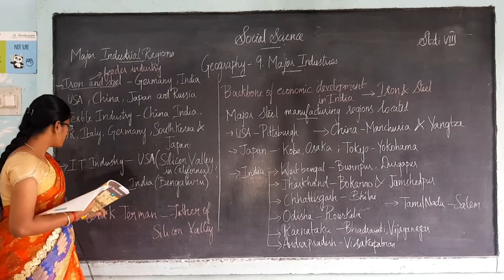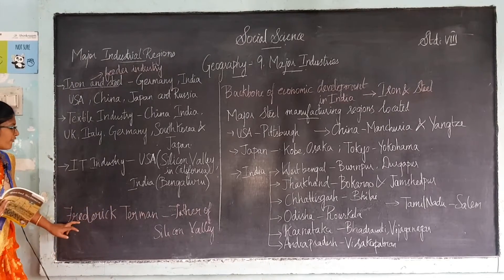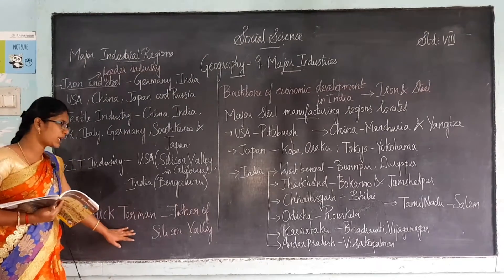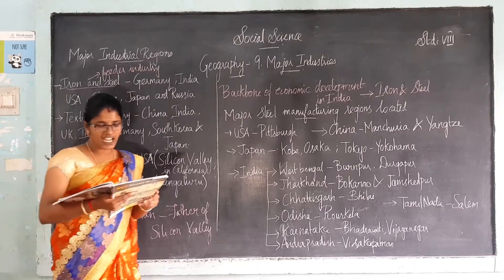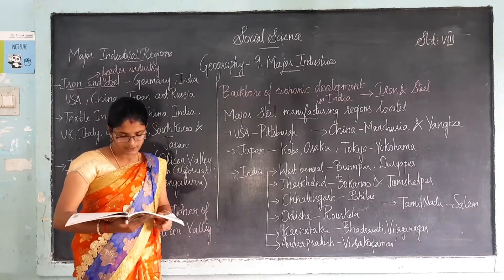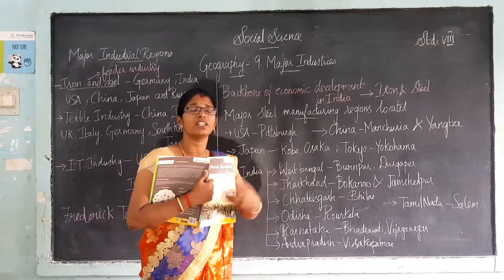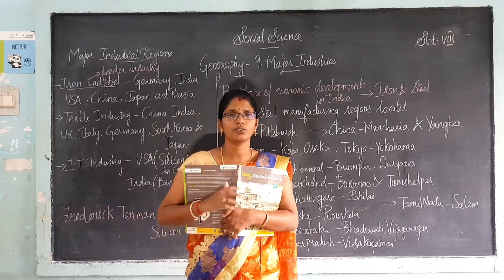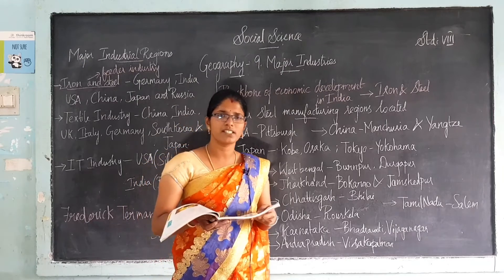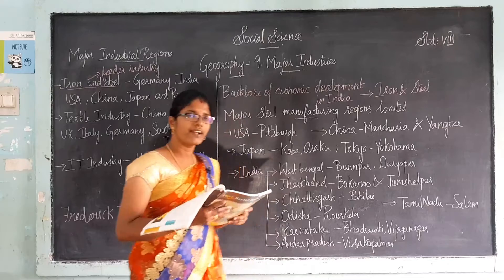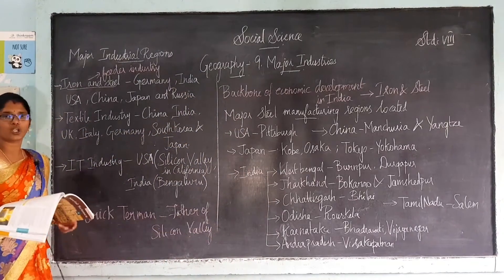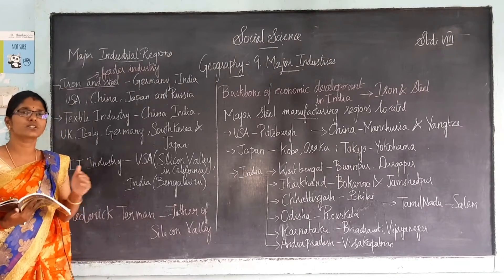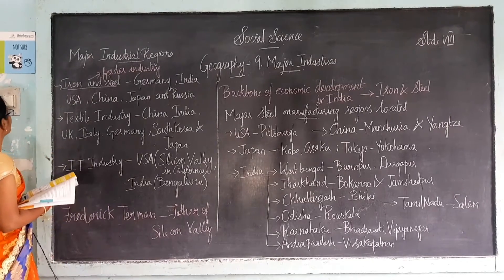Frederick Terman is the father of Silicon Valley. He created Stanford Industrial Park in 1951 and also mentored his students to start their industries and businesses in this park. So Frederick Terman, an American professor and researcher, is called the father of Silicon Valley.